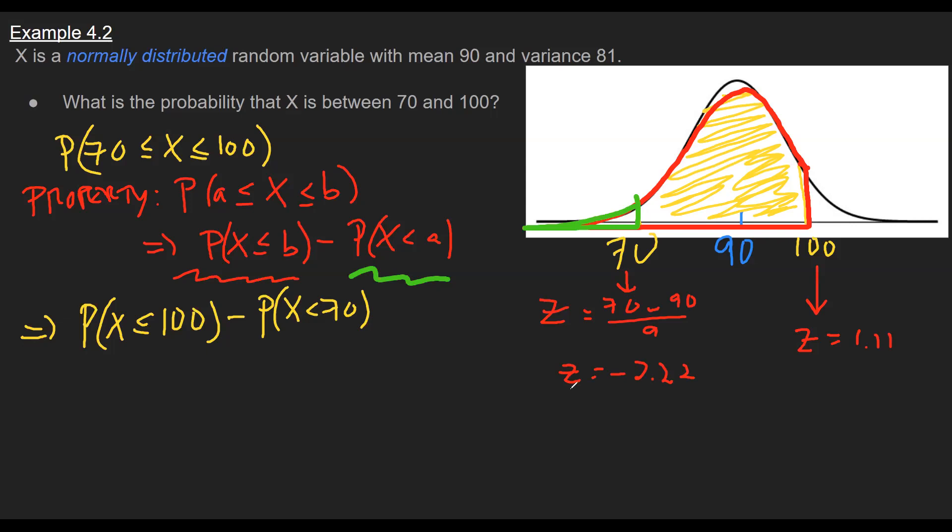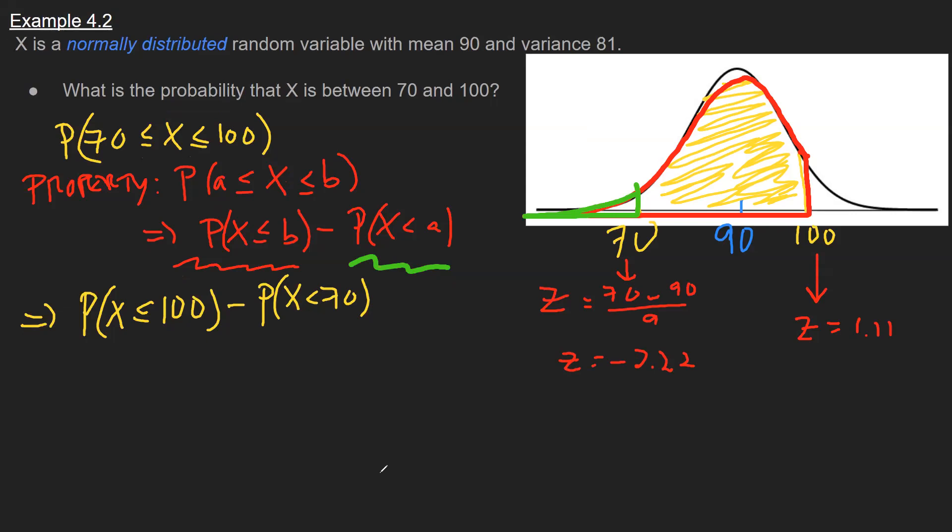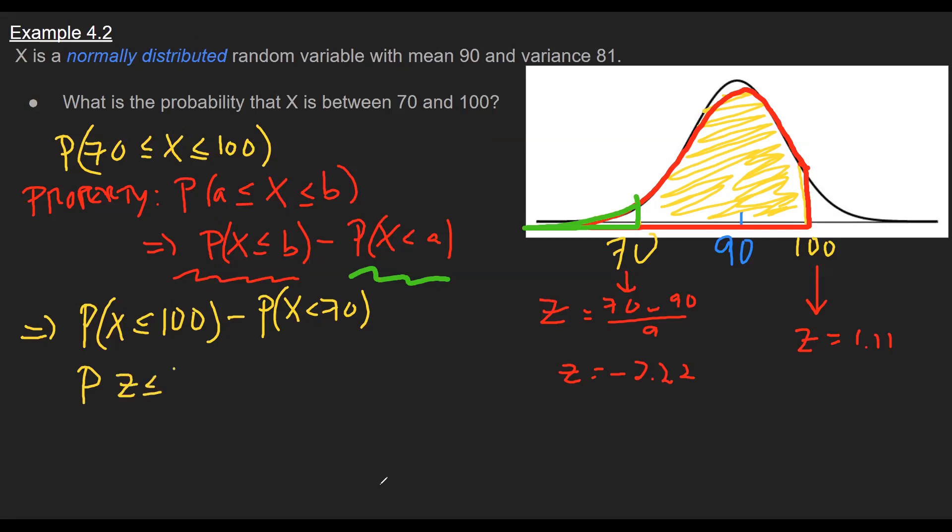So writing this problem in terms of Zs now, I've got the probability that Z is less than or equal to 1.11 minus probability Z is less than negative 2.22. And then both of these values I will just read off of the Z table. This was our 0.8665, and then I'll subtract off this value from the table. It's a negative Z, so I'm going to look on the left side of that table, and we see this is 0.0132. Finally, doing the subtraction, I will end up with 0.8533.